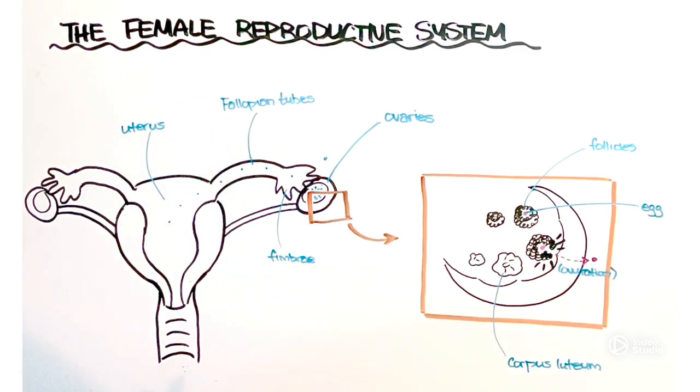If that egg is fertilized it's going to be undergoing a whole bunch of changes and it will eventually implant here into the uterine wall which is also known as the endometrial lining. This wall or endometrial lining contains a rich supply of blood vessels to support an embryo if it does in fact implant and begin to develop. If that were to happen that would mark the beginning of pregnancy here, that implantation process.